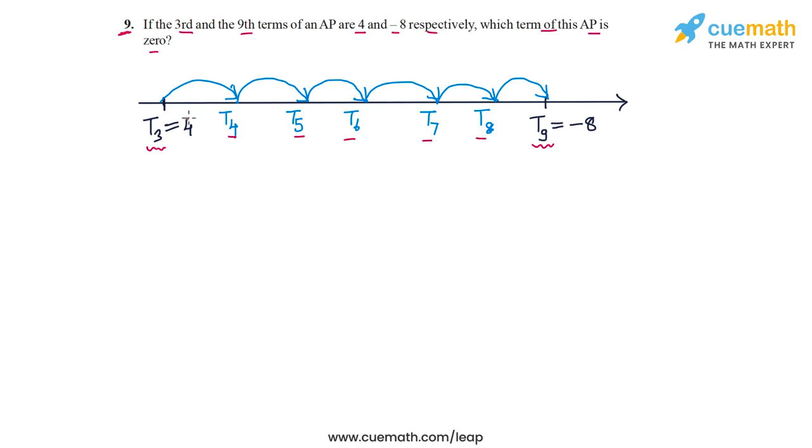We are given that T3 is 4 and T9 is minus 8. To get from T3 to T9 in the AP, we have to make six jumps of the common difference. For example, to go from T3 to T4, we need this jump of the common difference D, and so on.